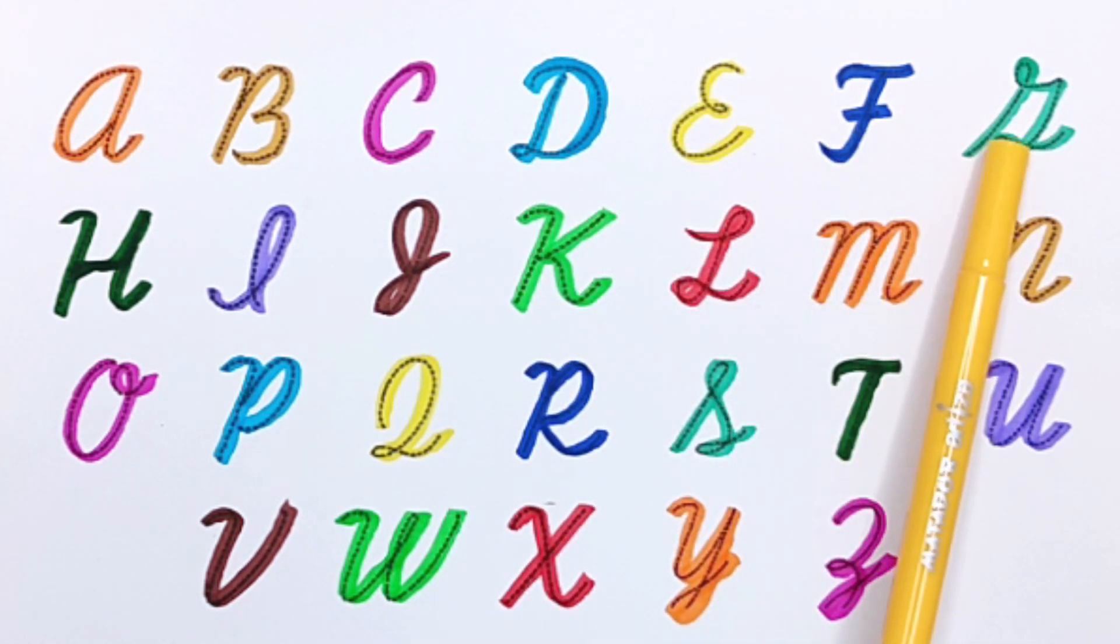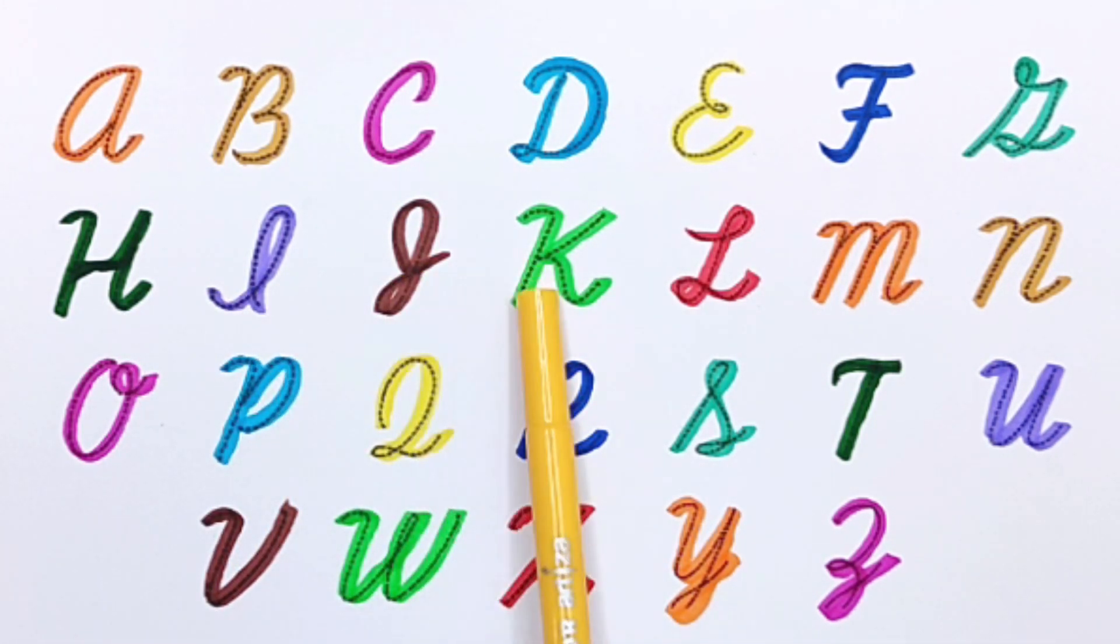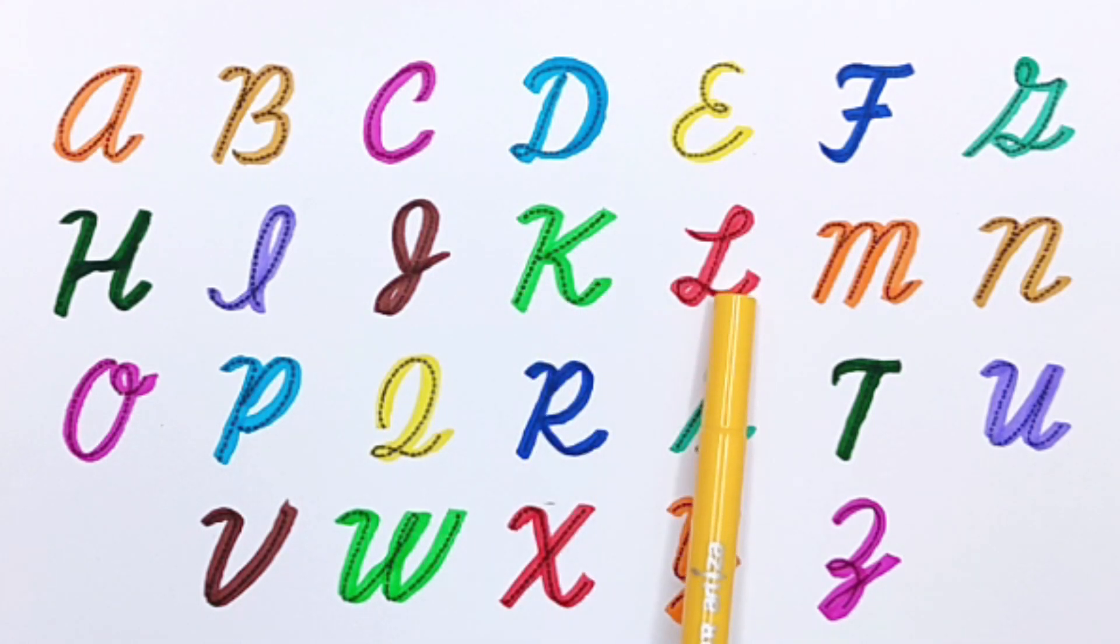T, U, V, W, X, Y, Z. The complete alphabet: A, B, C, D, E, F, G, H, I, J, K, L, M, N, O, P, Q, R, S, T, U, V, W, X, Y, Z.